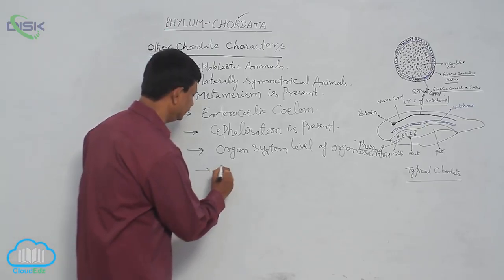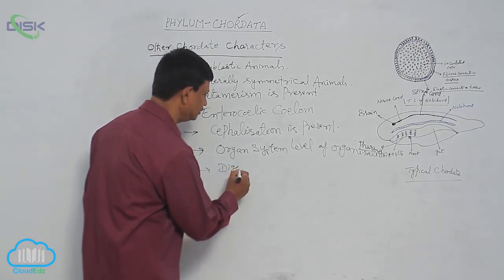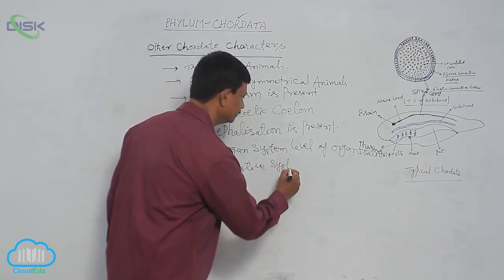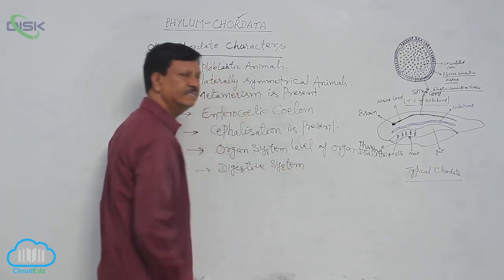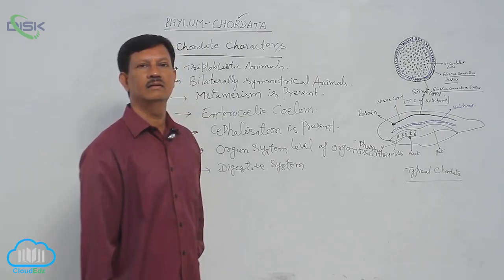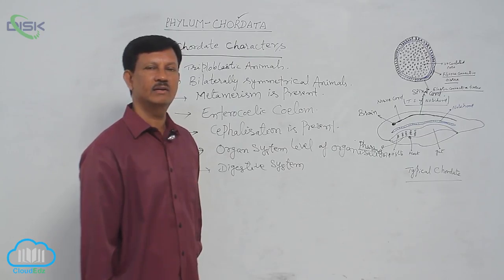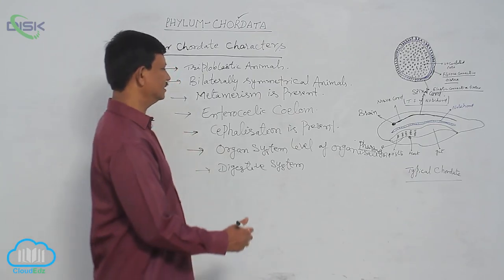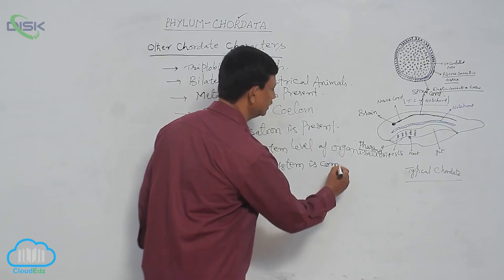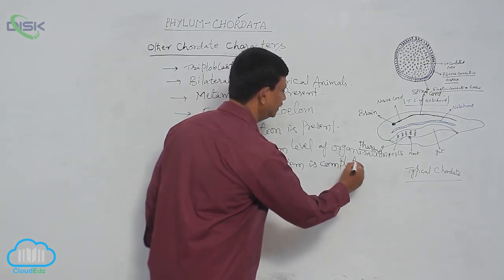The digestive system is complete. A complete digestive system is present in chordates. The digestive system has a complete elementary canal that is well developed, and digestive glands are also associated with the elementary canal. That is why the digestive system is complete and well developed.